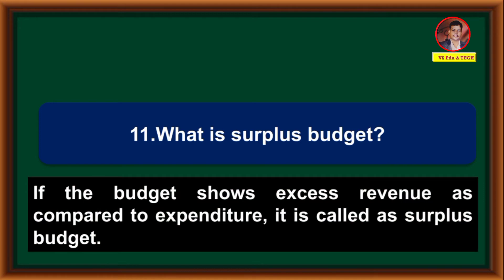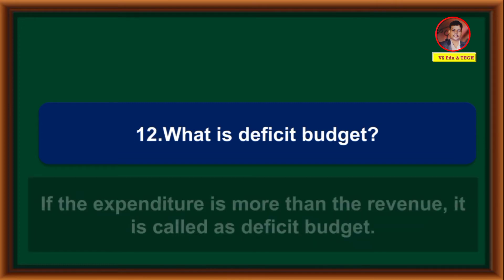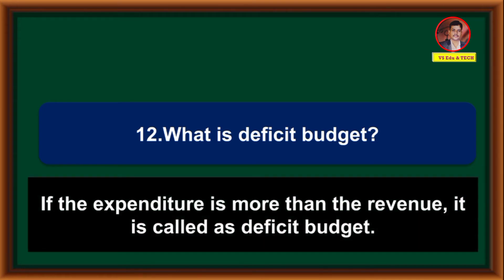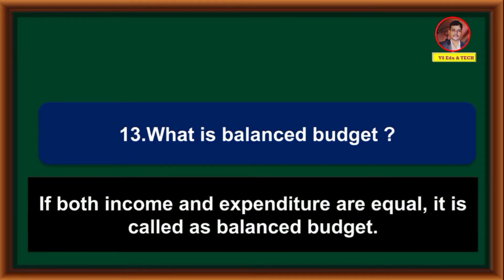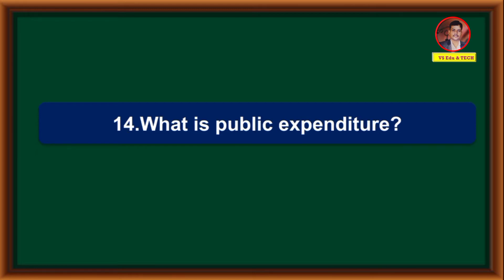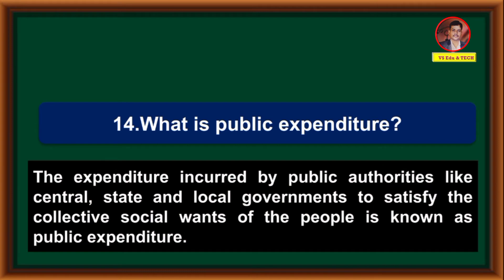If the budget shows excess revenue as compared to expenditure, it is called a surplus budget. If the expenditure is more than the revenue, it is called a deficit budget. If both income and expenditure are equal, it is called a balanced budget.